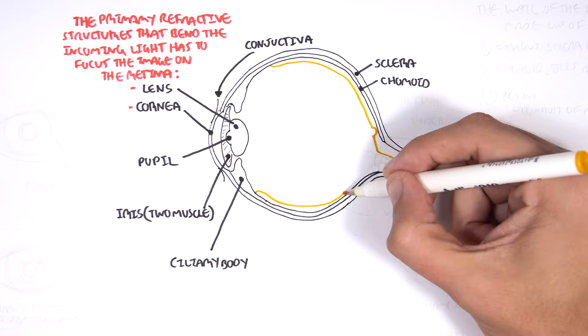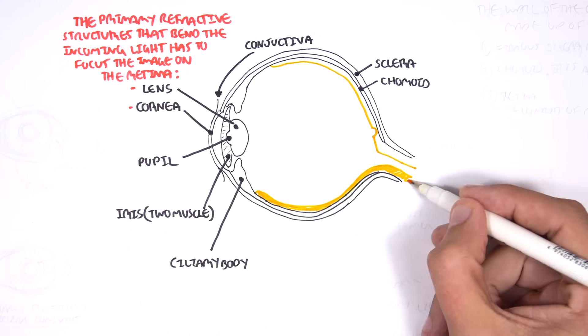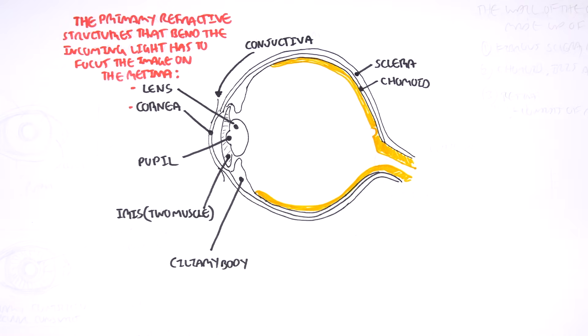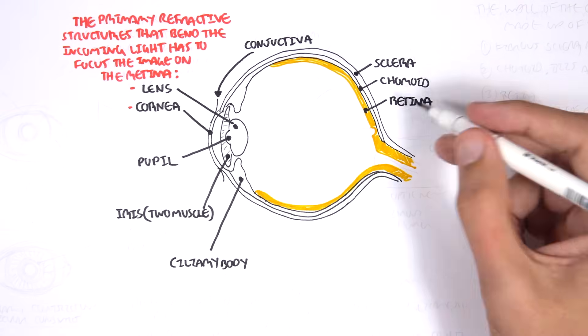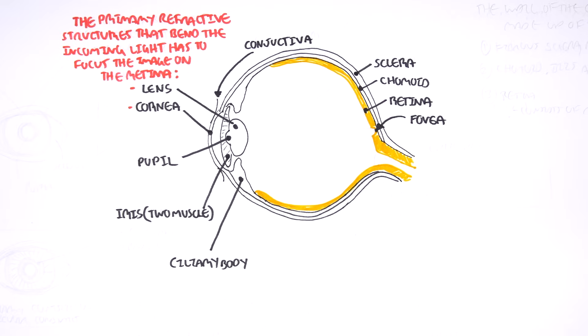The inner layer of the eyeball is the retina, which contains the photoreceptors. The retina has a section called the fovea. The fovea is a small central pit composed of closely packed cone cells, the cones in the eye. And cones are your photoreceptors.